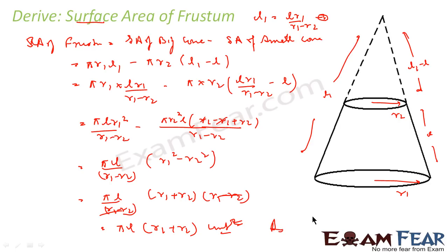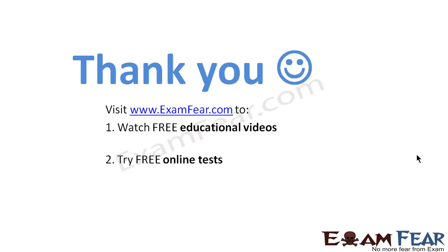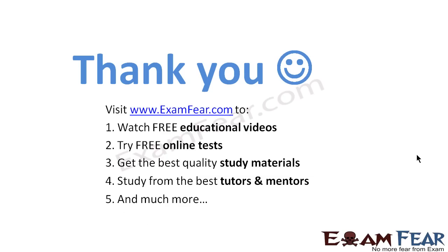We found L1 in terms of L, R1, R2, and H1 in terms of H, R1, R2. The volume of the frustum is the volume of the bigger cone minus the smaller cone, and the surface area of the frustum is the surface area of the bigger cone minus the surface area of the smaller cone. Visit examfear.com to watch free educational videos, try free online tests, and get the best quality study materials. Thanks once again.